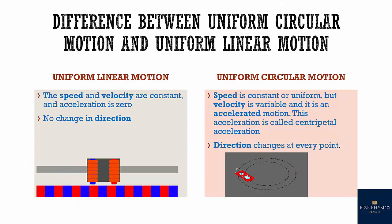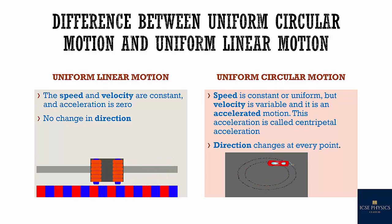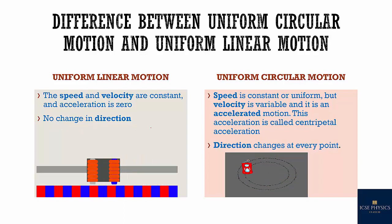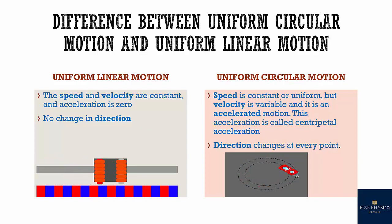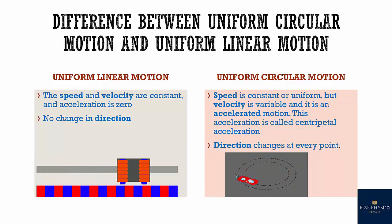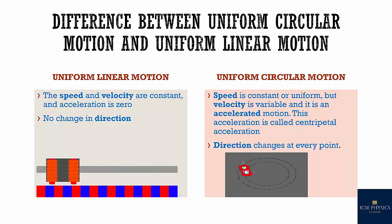What is the difference between uniform linear motion and uniform circular motion? In uniform linear motion, speed and velocity are constant, acceleration is zero, and there is no change in direction. In uniform circular motion, speed is constant but velocity is variable, it is an accelerated motion, and this acceleration is called centripetal acceleration. The direction changes at every point.